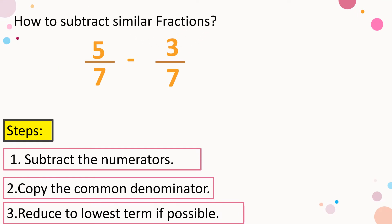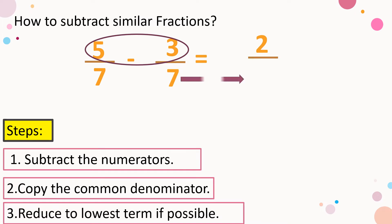Now, how to subtract similar fractions. Number one, subtract the numerators. So we have five minus three, that is equal to two. And then, copy the common denominator, that is equal to seven. And reduce to lowest term if possible. The final answer is two over seven, which is already in lowest term.